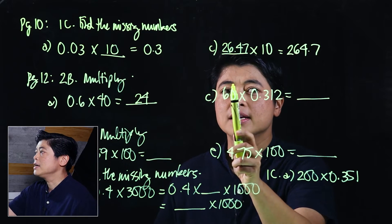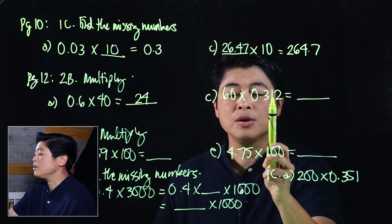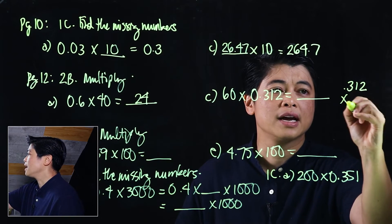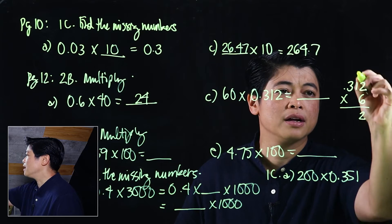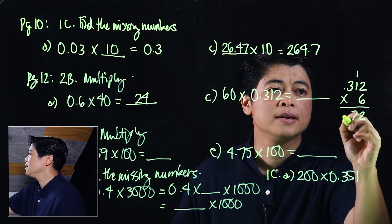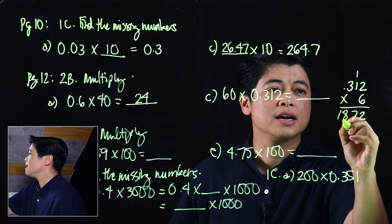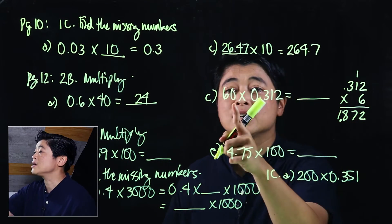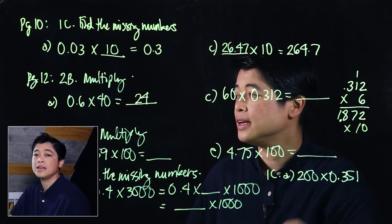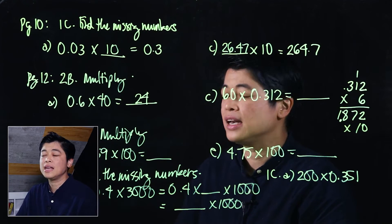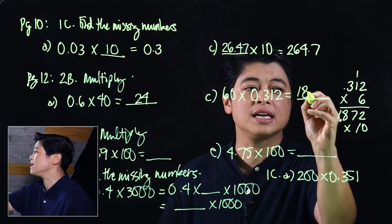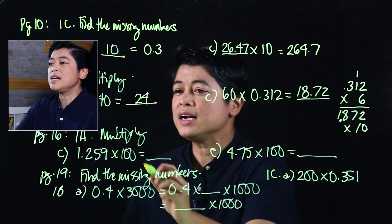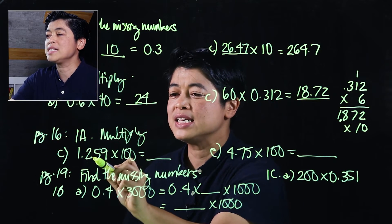For a more complex example, if I can't do it mentally, I work it on the side: 0.312 times 6. Multiplying gives digits 2, 10, and 7, with three decimal places, so that's 1.872. Since there's one zero in the multiplier, that means we're multiplying by 10 — so move the decimal one place to the right, giving 18.72.